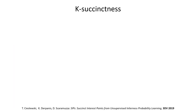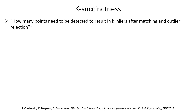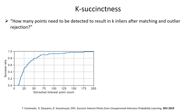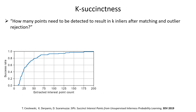To quantify this goal, we define a metric which we call k-succinctness. It answers the question: how many points need to be detected to result in k inliers after matching and outlier rejection? This is answered for every image pair in an evaluation dataset, and the cumulative distribution is plotted. Here, we see a k-succinctness curve where 80% of the image pairs get k inliers with 50 extracted interest points or less, 90% get k inliers with 75 extracted interest points or less, etc. The further to the top left this curve is, the better.